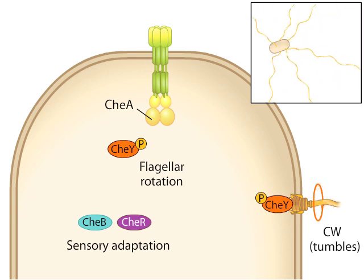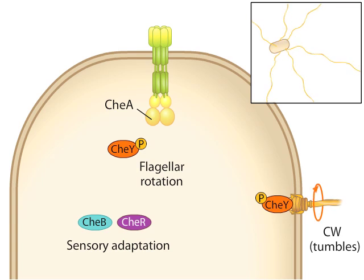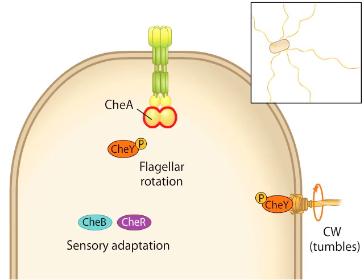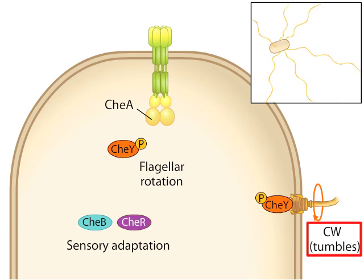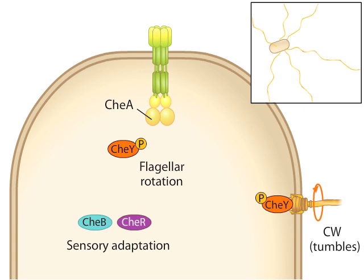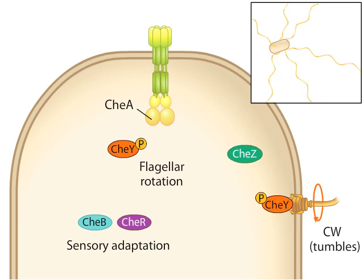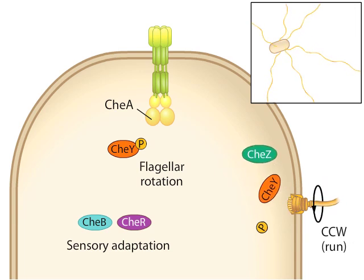The cell tumbles, and then faces a new direction in which to possibly encounter the chemical attractant. Thus, when no attractant is bound, CheA is active, CheY is phosphorylated, and the cell tumbles frequently. To keep the response dynamic, the stimulus is quickly terminated by the action of a protein called CheZ, which removes the phosphate from CheY.